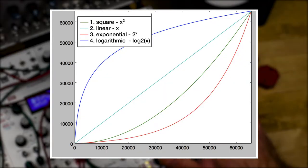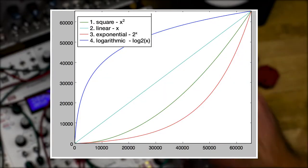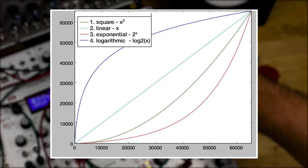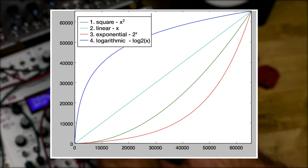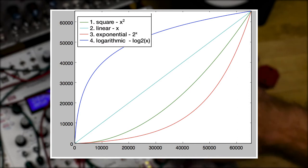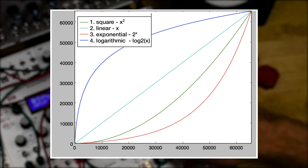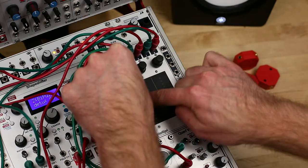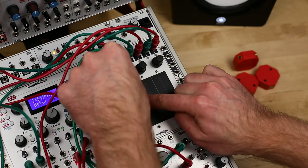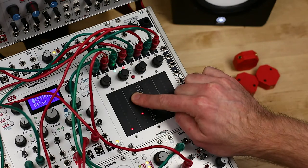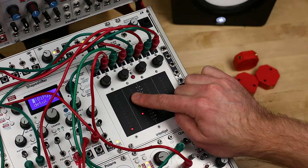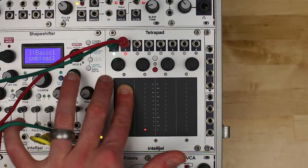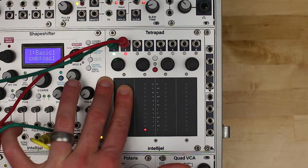There are four pressure response curve settings: square, linear, exponential, and logarithmic, with number one — square — as the default. Number four, logarithmic, will produce more of an on-off effect. This is useful if you want to toggle things or trigger gates when you touch a pad. Other settings sweep more gradually from lower to higher values.